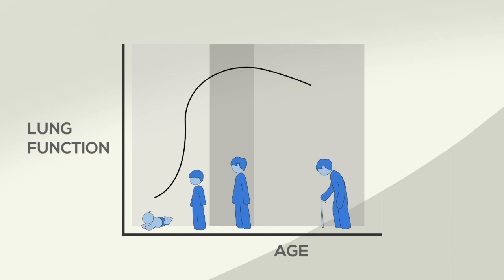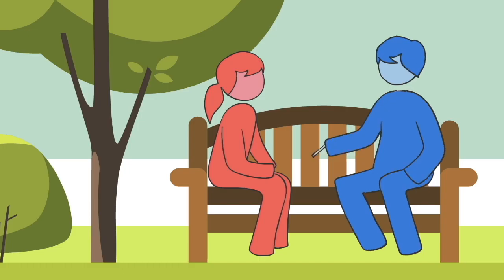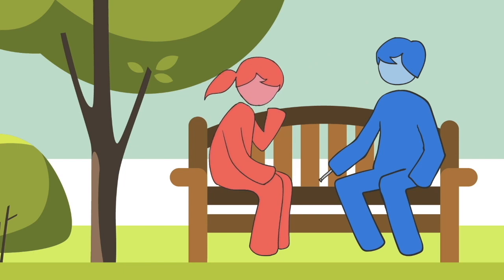But this decline never causes problem as we have lots of extra factories and tubes more than what we need. However, due to smoking, lungs may not grow to normal size. Or the decline may happen earlier and quickly. Smoke exposure, whether direct or indirect, damages lungs at all stages of our life.